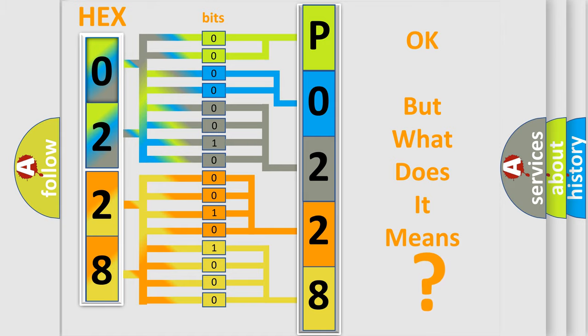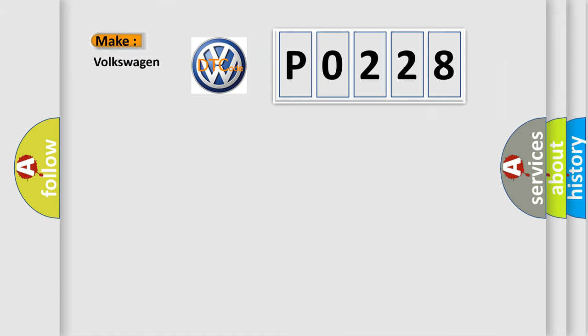The number itself does not make sense to us if we cannot assign information about what it actually expresses. So, what does the diagnostic trouble code P0228 interpret specifically for Volkswagen car manufacturers?